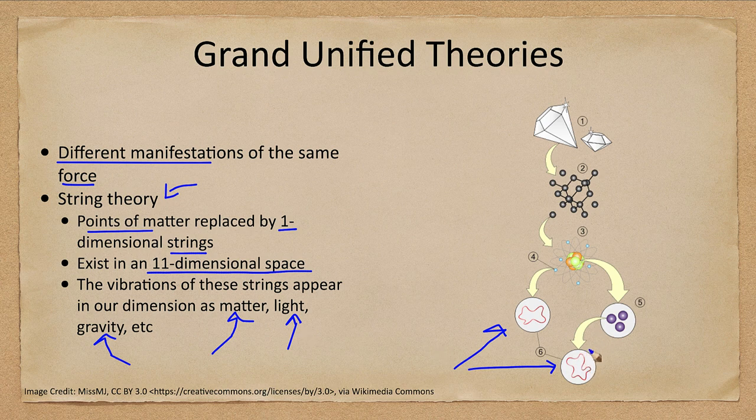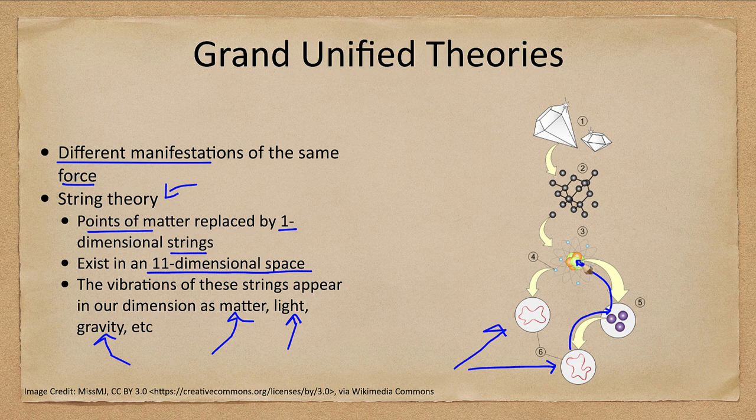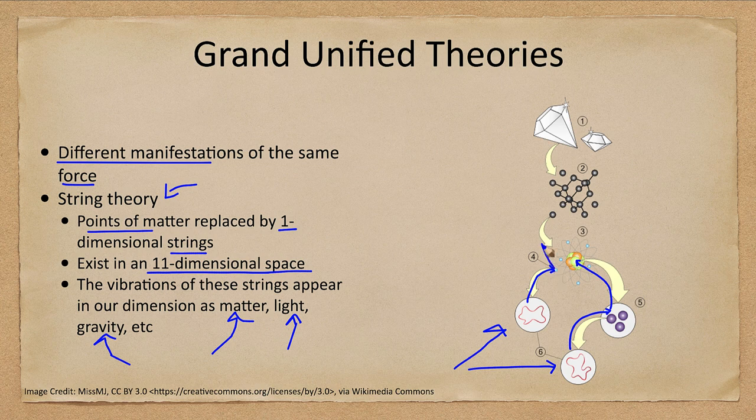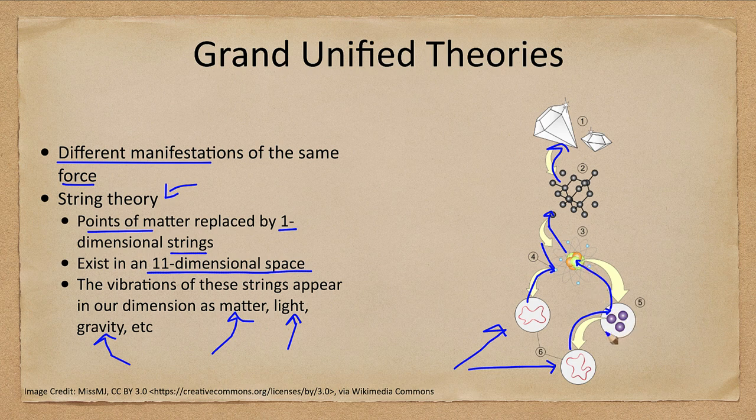So the string, depending on how it vibrates, may become one of the quarks within one of the protons within the nucleus. Another string vibrating in a different way may become an electron. That will then be part of an atom, which in this case we see comes up as part of a diamond. So it's all going down to even deeper levels within the subatomic sphere.